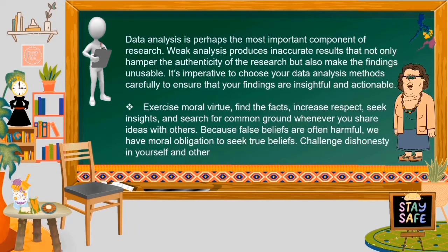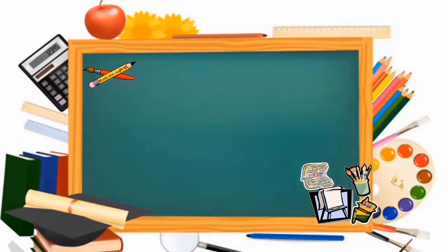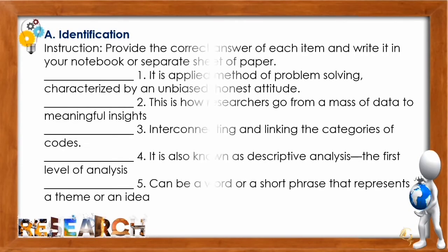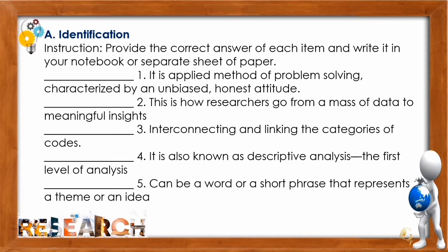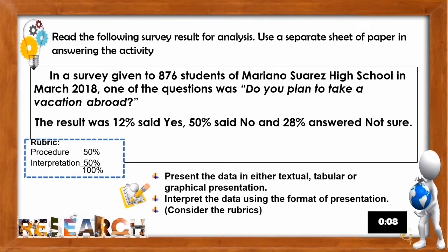If you understand our discussion, please give yourself a virtual clap. If you have clarifications, please don't hesitate to inform me. Now let's proceed with our evaluation to test if you really understand our topic. Make sure to read the directions and observe the time — strictly no erasures if you have your paper with you. Good luck. For Test A — Identification: provide the correct answer for each item and write it in your notebook or a separate sheet of paper. For Test B: read the following survey result analysis, and use a separate sheet of paper. Make sure to present the data in textual, tabular, or graphic presentation and interpret the data using the format of presentation. You are guided with rubrics — Presentation 50%, Interpretation 50%, for a total of 100%.